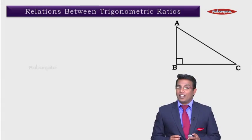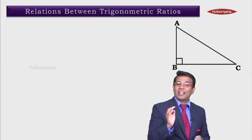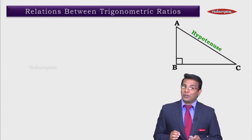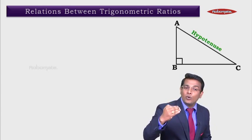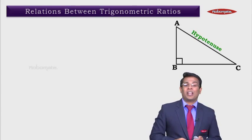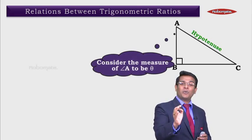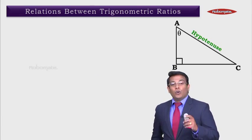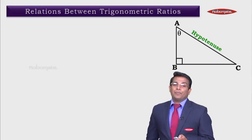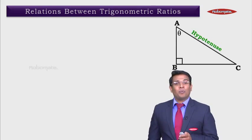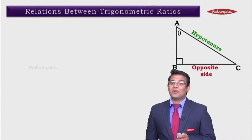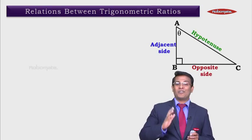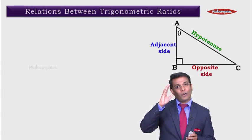For that, first we require a right angle triangle. So we have a right angle triangle ABC where AC is the hypotenuse. Let's consider an acute angle — we take that acute angle A and we take the measure of that acute angle A to be theta. With respect to theta, BC is the opposite side and AB is the adjacent side. This is something which we had already learnt.